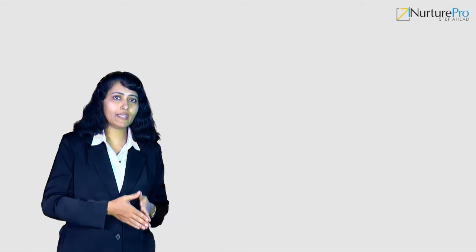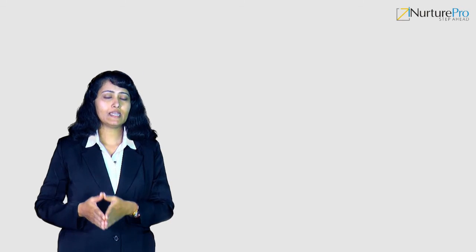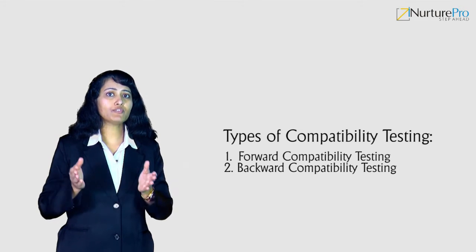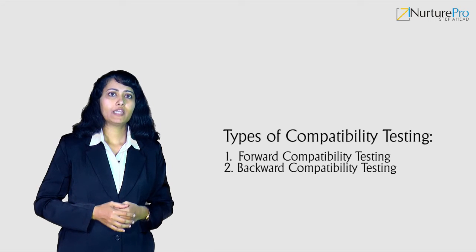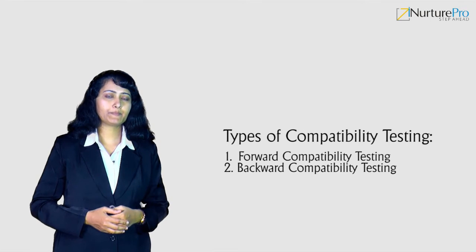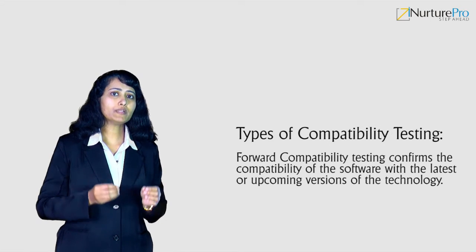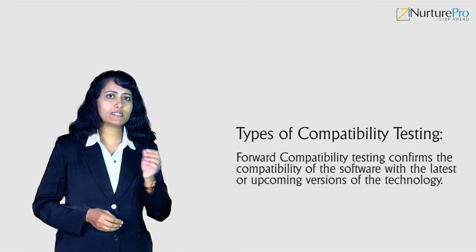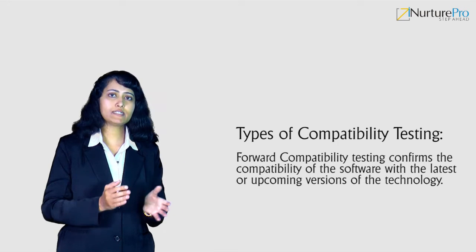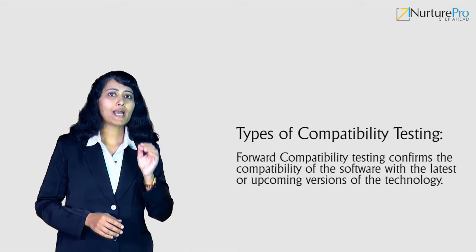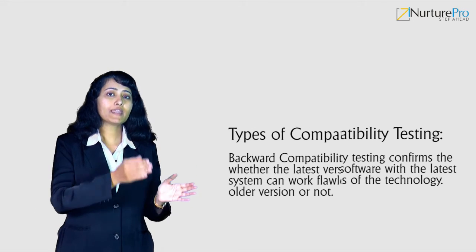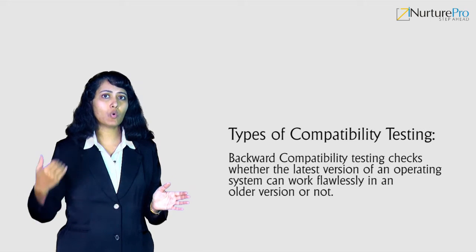As you have learned about the need for compatibility testing, let us study about the types of compatibility testing. There are two different types: forward compatibility testing and backward compatibility testing. Forward compatibility testing confirms the compatibility of the software. Backward compatibility testing checks whether the latest version of an operating system can work flawlessly in an older version or not.